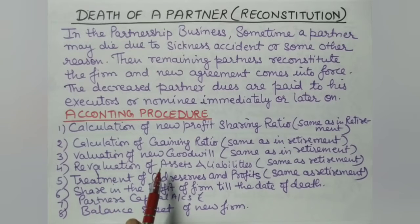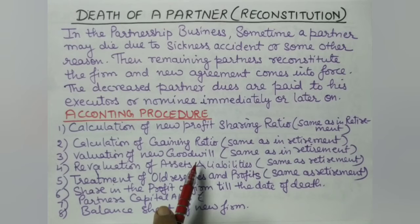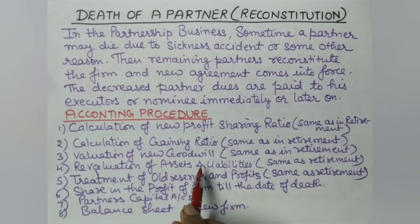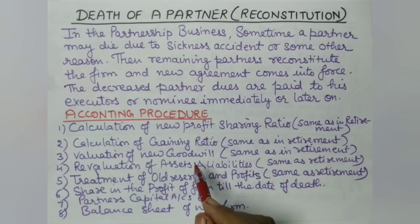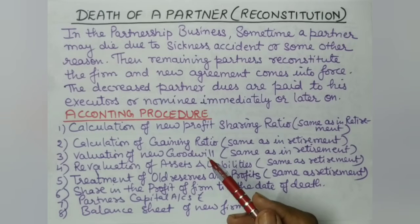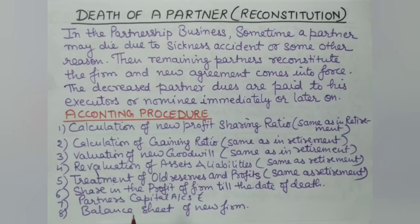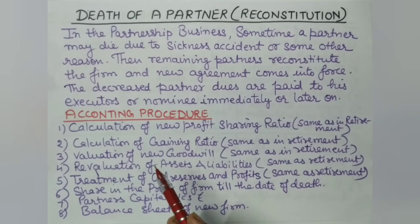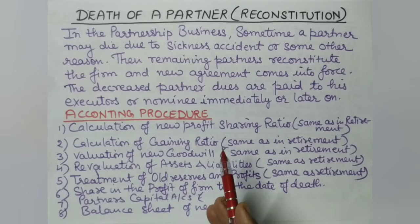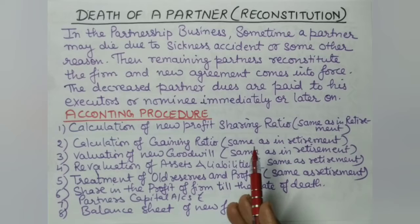Third, we calculate the value of goodwill of the new firm as of the date of death. For goodwill valuation, there are three methods: super profit method, average profit method, and capitalization of average profit or super profit. It depends on the information provided in the question. We use the method based on the available information. The goodwill journal entry is then made — same as in retirement — in the gaining ratio.